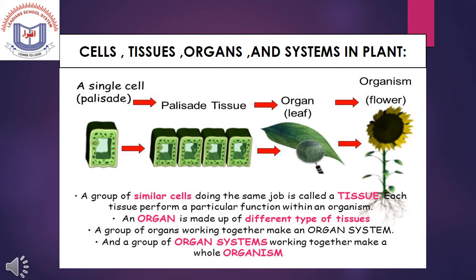Cells, tissues, organs and systems in plants: A single palisade cell makes up palisade tissue, which together with other tissues makes up a leaf. A leaf is an organ. Leaves and other organs make up a whole plant, and the plant is an organism.